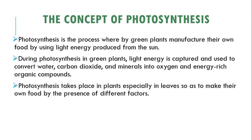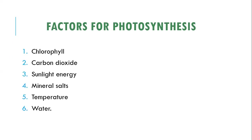There are various factors that influence the process of photosynthesis. The first one is chlorophyll — this is essential, as the plant leaves must have chlorophyll to facilitate photosynthesis, because the process takes place within green plants. The second factor is the presence of carbon dioxide within the air, which is important for the process and for the manufacturing of food for plants.